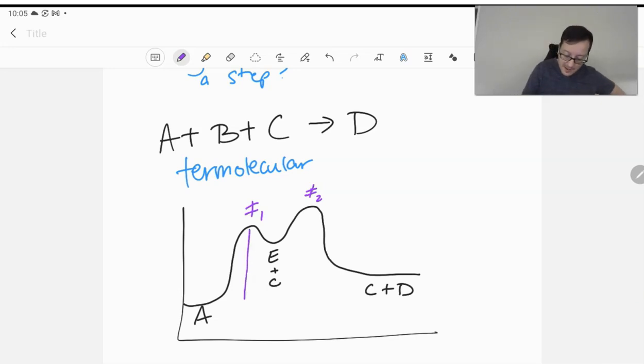Note that activation energy two is related to the intermediate, which is E. We call that part, which is E, the intermediate.